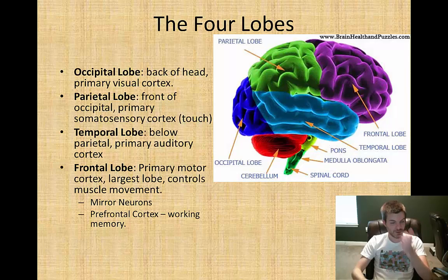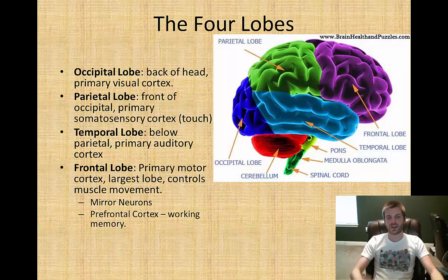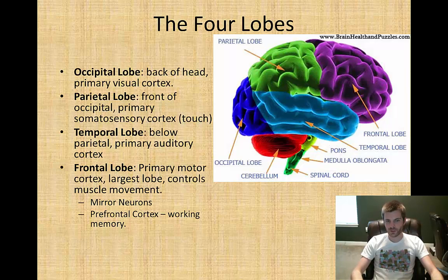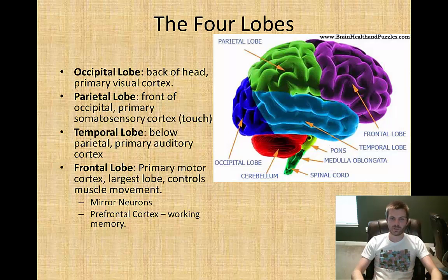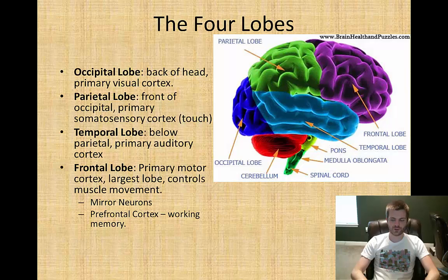The frontal lobe is basically right behind your forehead and deals with the primary motor cortex — motor movement skills. It is the largest lobe and also deals with working memory, the prefrontal cortex, decision making, and judgments. It's very complex. That covers your four lobes.